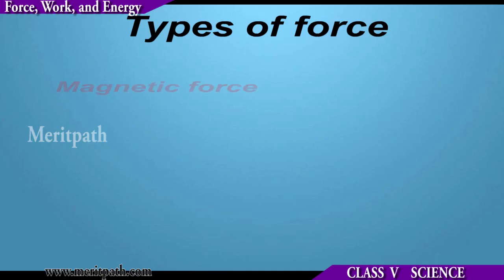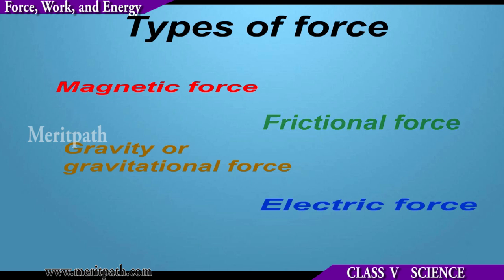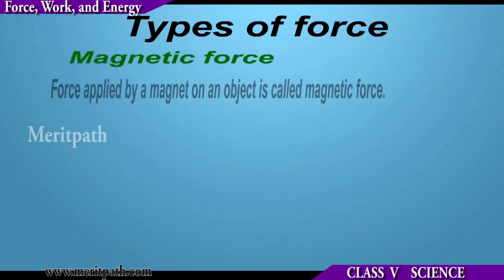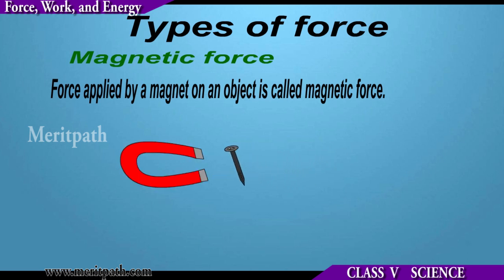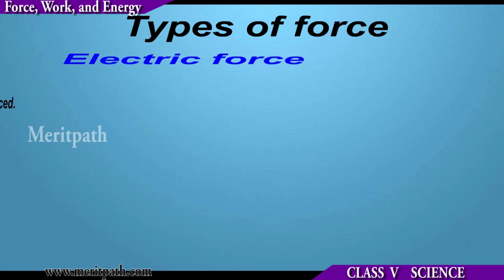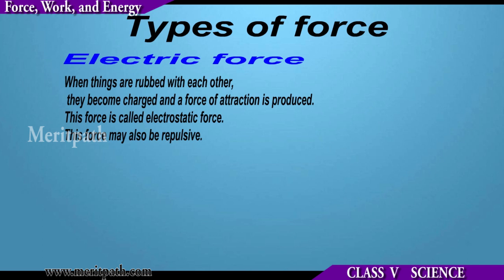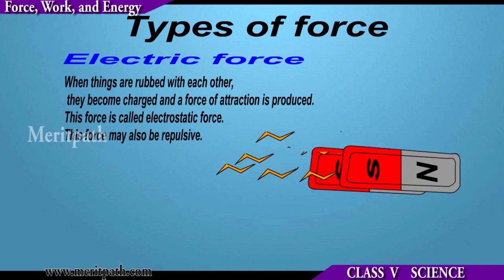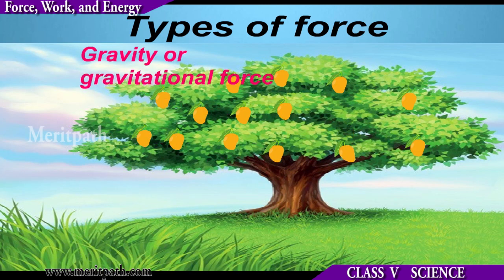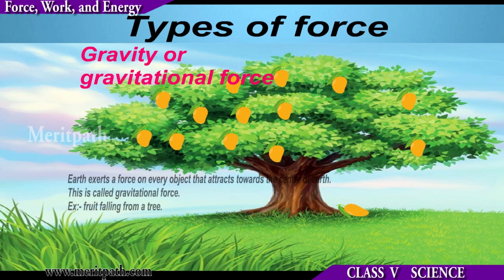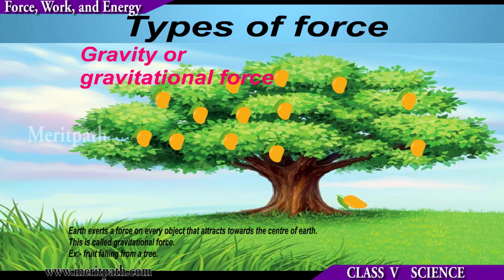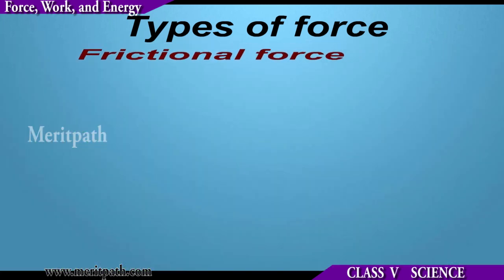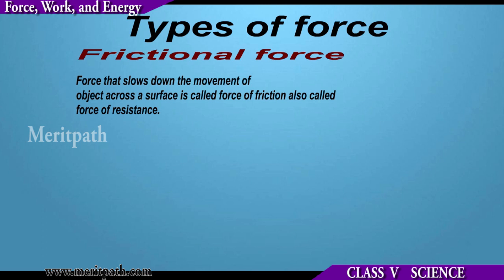There are different types of force: magnetic force, electric force, gravitational force, and frictional force. A magnetic force is a force applied by a magnet on an object. Electric force is the electrostatic force caused by rubbing things with each other so that they become charged. Gravitational force is the force of attraction of the earth to the objects on it.